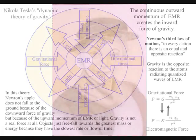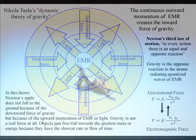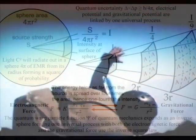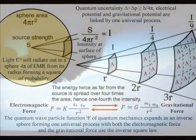In this theory, gravity is a secondary force to the electromagnetic force. Objects just freefall towards the greatest mass or energy because it has the slowest rate that time flows.